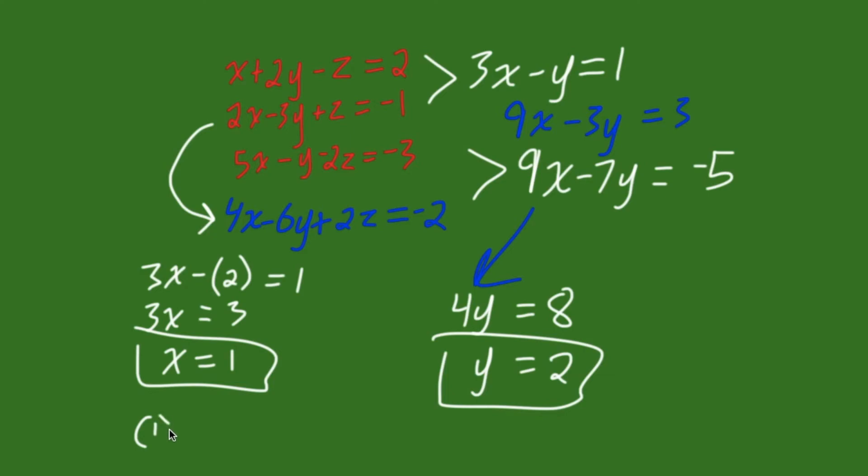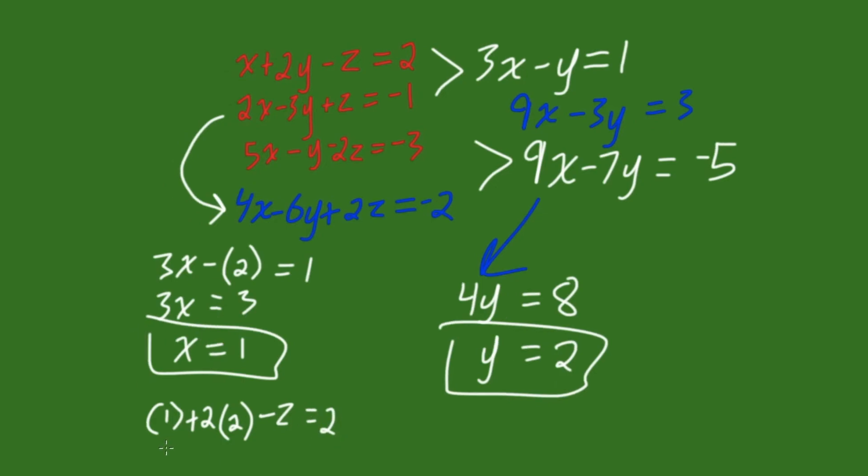That top equation is x, which is 1, plus 2y, where y is 2, minus z, which is what we're trying to solve for. Our z equals 2. Now, that's the same as 1 plus 2 times 2, which is 4. So, 1 plus 4 is 5. Minus z equals 2. Now, let's move this up here to give us some more space.